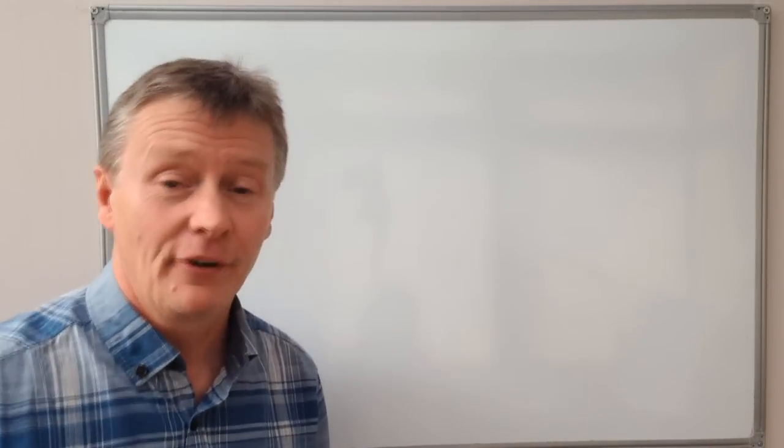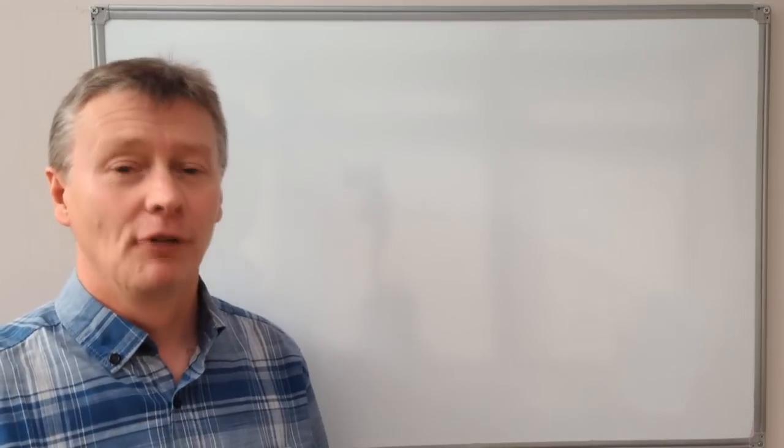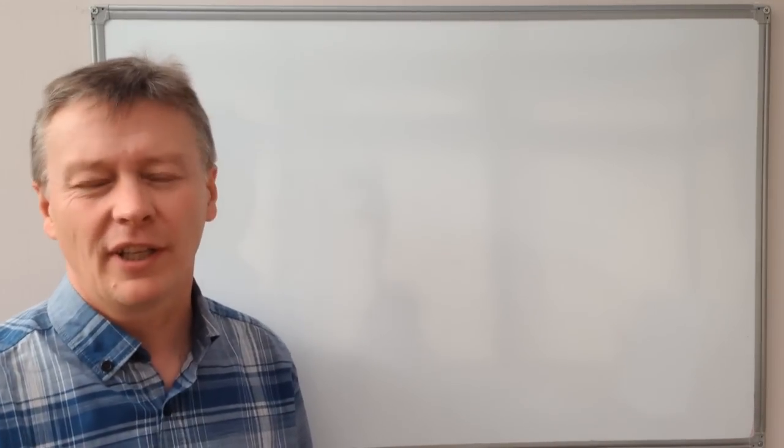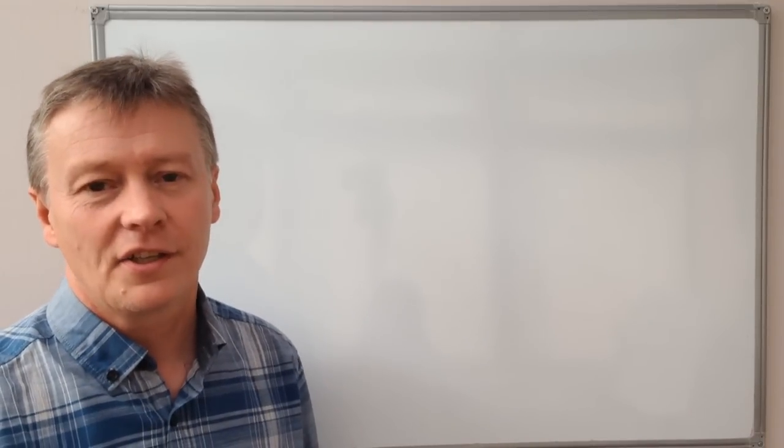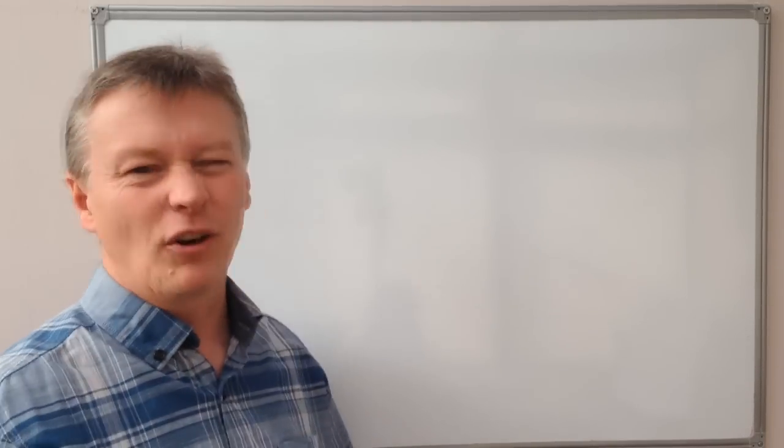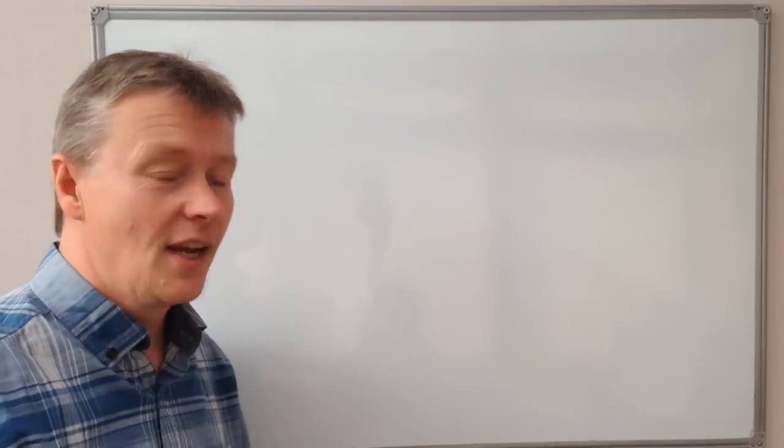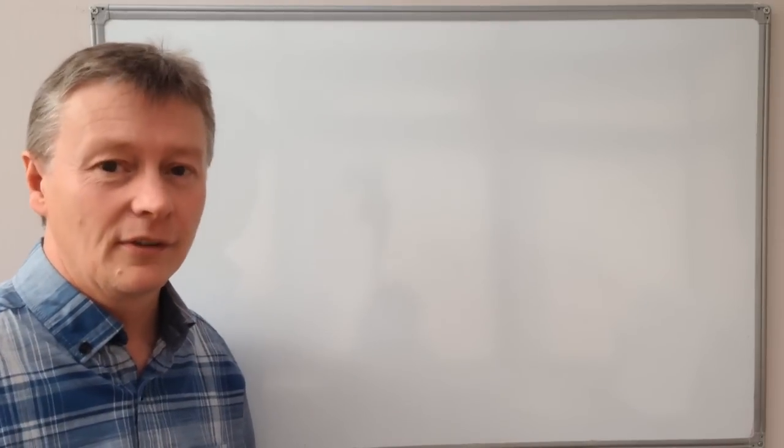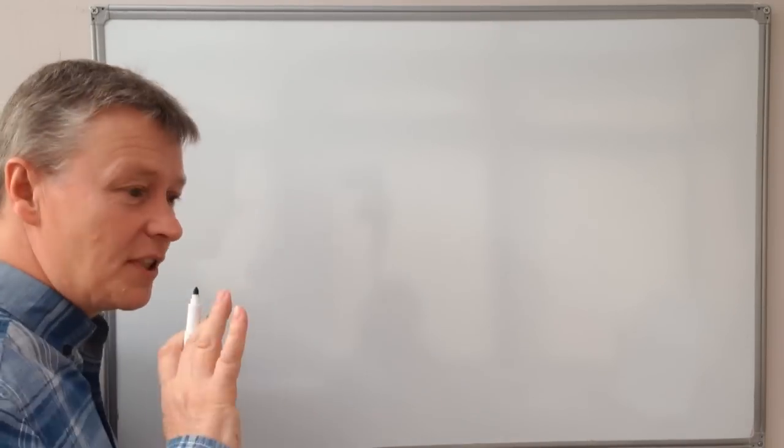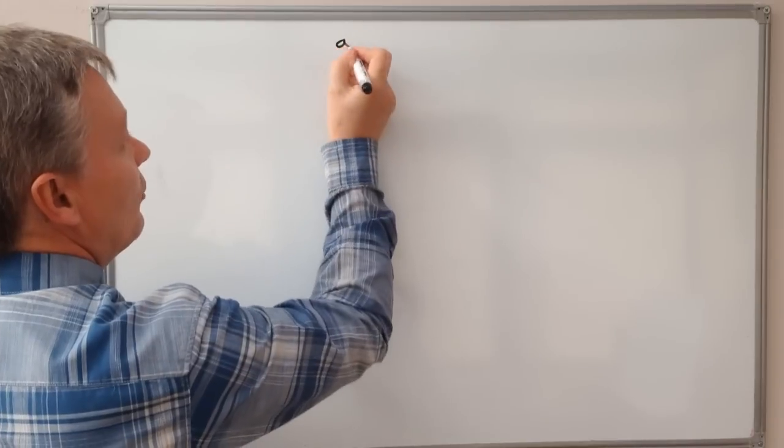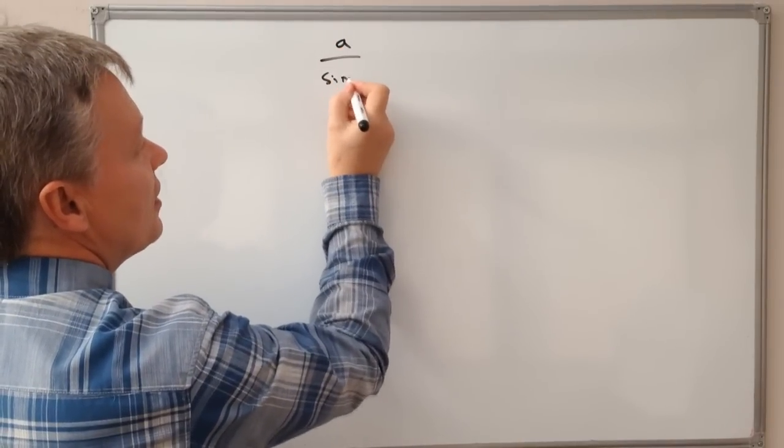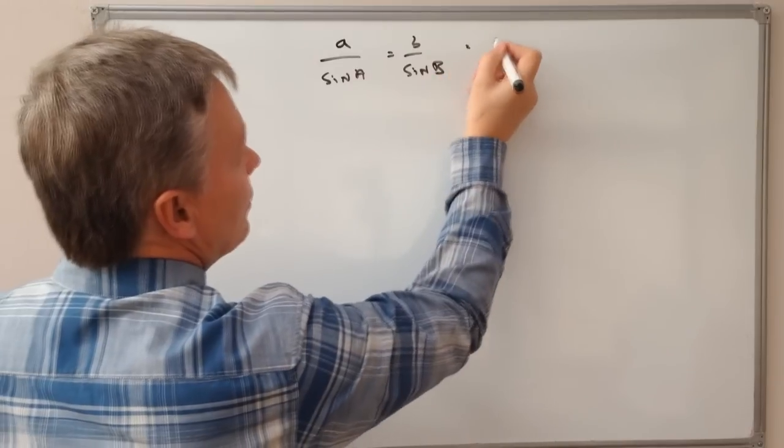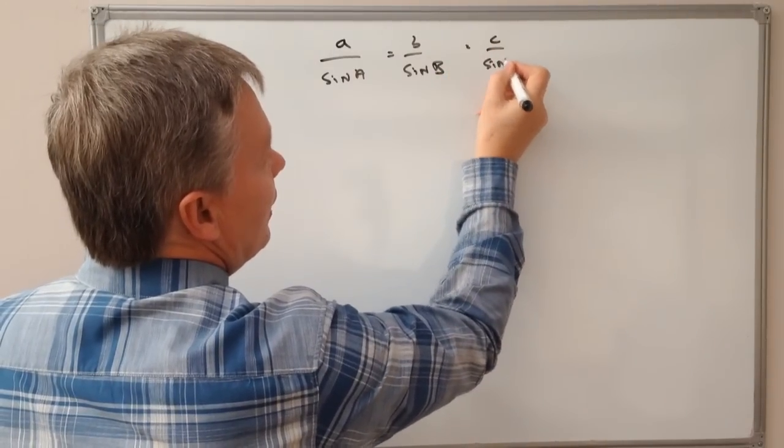Hi, so this is the second video in the playlist on the sine rule, and this particular video is aimed at generally higher level high school maths, typically a grade A question. It deals with the relationship between the sides and angles of triangles. In this video we're going to look at this relationship which is A over sine A equals B over sine B equals C over sine C.